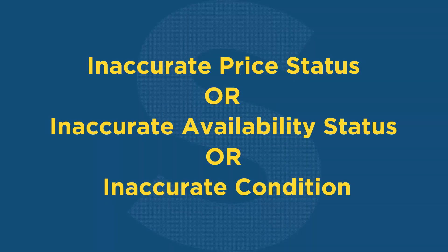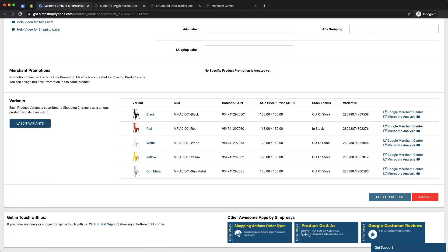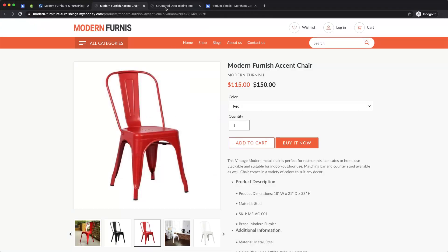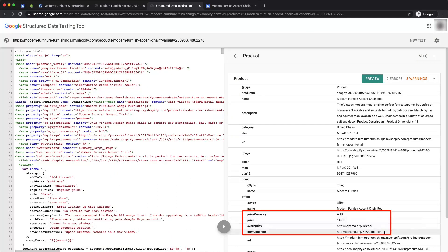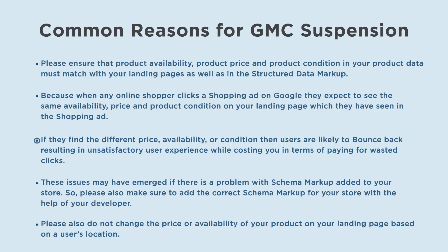Scenario 6: Google Merchant Center is suspended due to inaccurate price status, inaccurate availability status, or inaccurate condition. Please ensure that product availability, product price, and product condition in your product data match your landing pages as well as in the structured data markup. When a shopper clicks a shopping ad, they expect to see the same availability, price, and condition on your landing page as shown in the ad. If they find a discrepancy, users are likely to bounce back. Please also make sure to add the correct schema markup with the help of your developer.